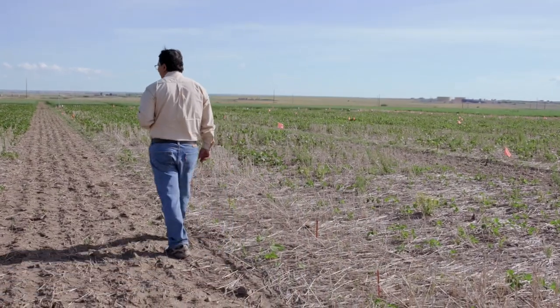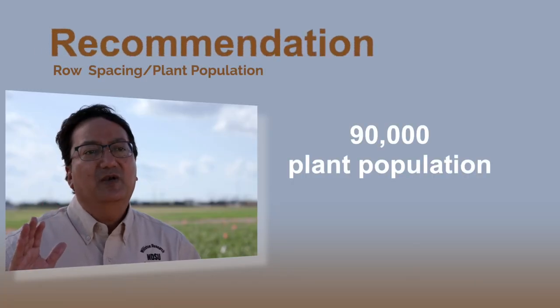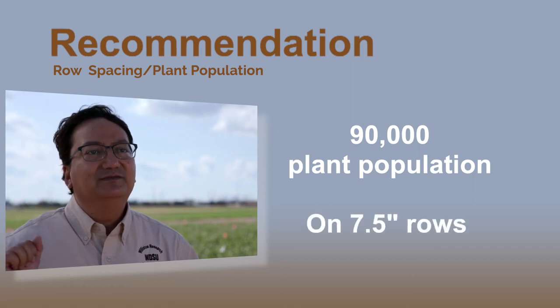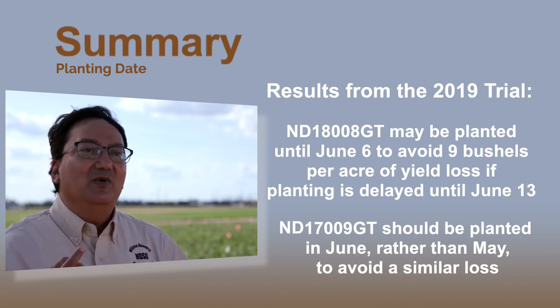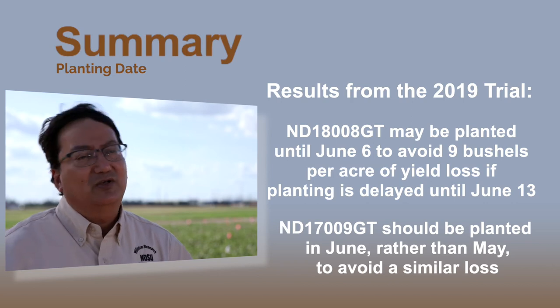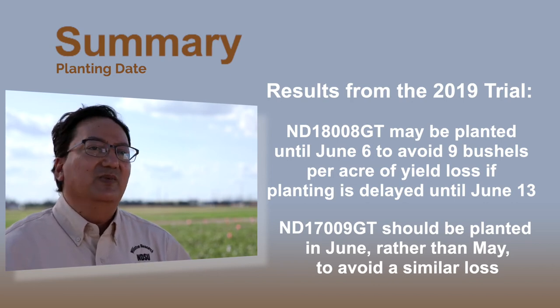From my three years of results, I learned that for the western part of North Dakota, which is very dry — we have only 13 to 14 inches of rain annually compared to the eastern part which usually has 20 inches — 90,000 live seeds per acre and seven and a half inch row spacing is far better than other combinations. I also learned that varieties respond differently: one variety performed better when planted in May, but another variety did quite well when planted in June.